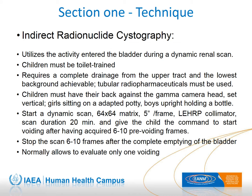Indirect radionuclide cystography (IRC) is performed after dynamic renal scintigraphy using the activity collected in the bladder at the end of the scan. Normally this requires the child's cooperation, as bladder-emptying images are recorded after repositioning of the camera and the child — the child should void at the technician's command, implying that the child must be toilet trained. It is possible to record bladder emptying images of a non-toilet trained child and seldom find a reflux, but the overall reliability is generally lower, especially in children with a dilated excretory system.